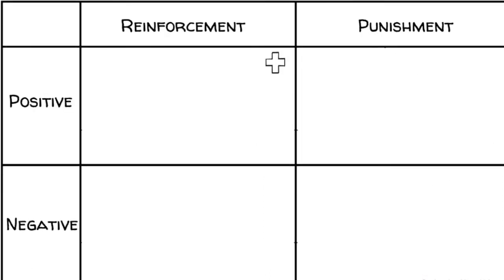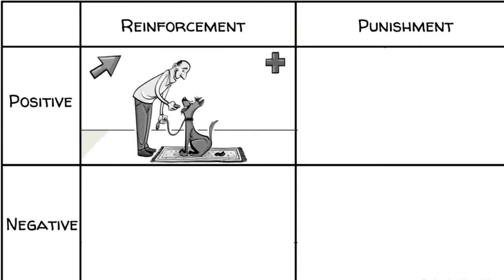We can draw the four options in a table. If reinforcement is positive, we add something pleasant, like a cookie, to increase the likelihood of a behavior.